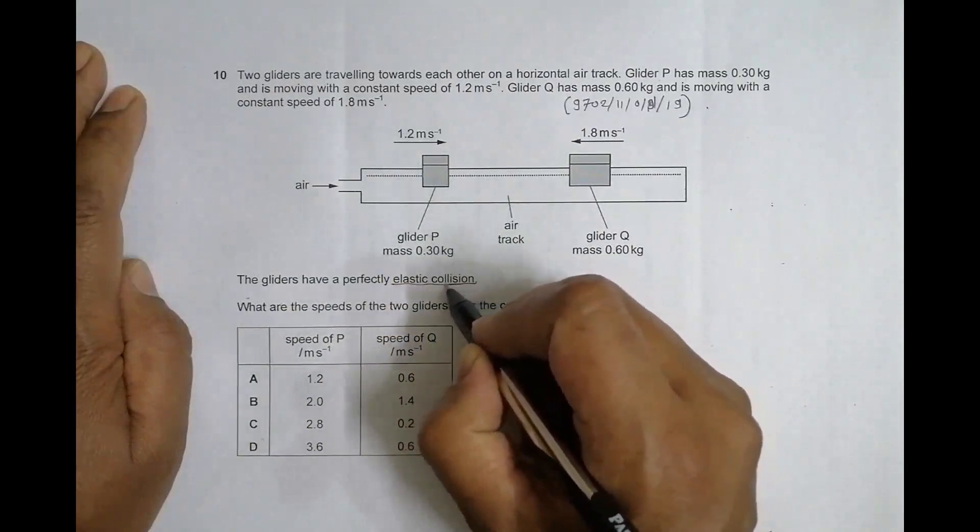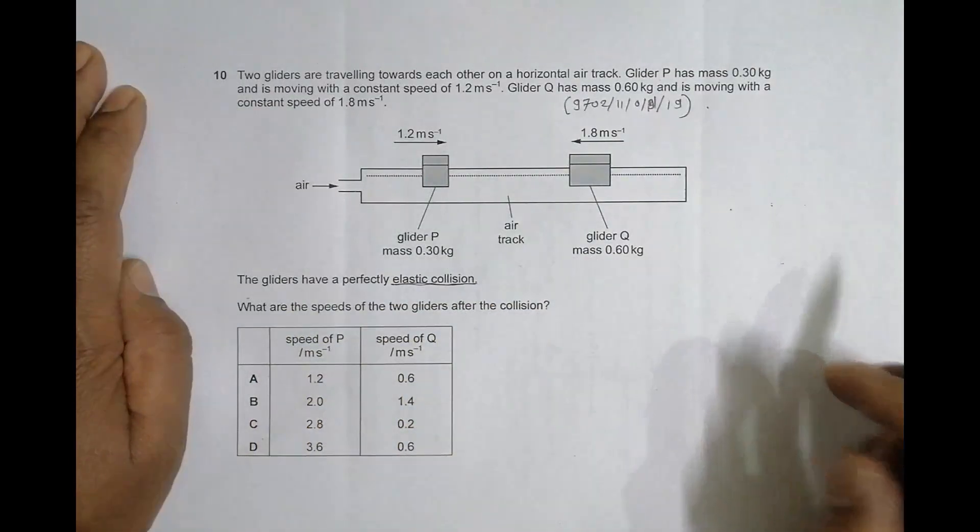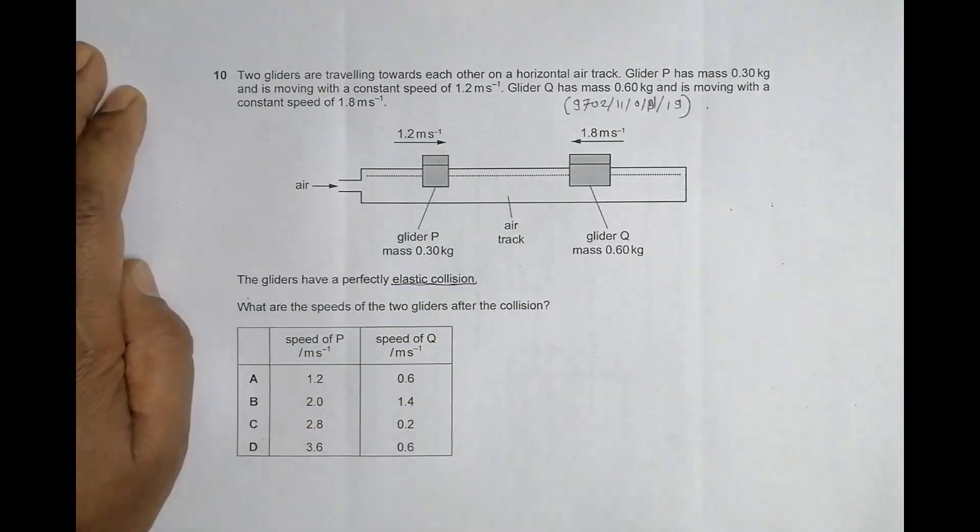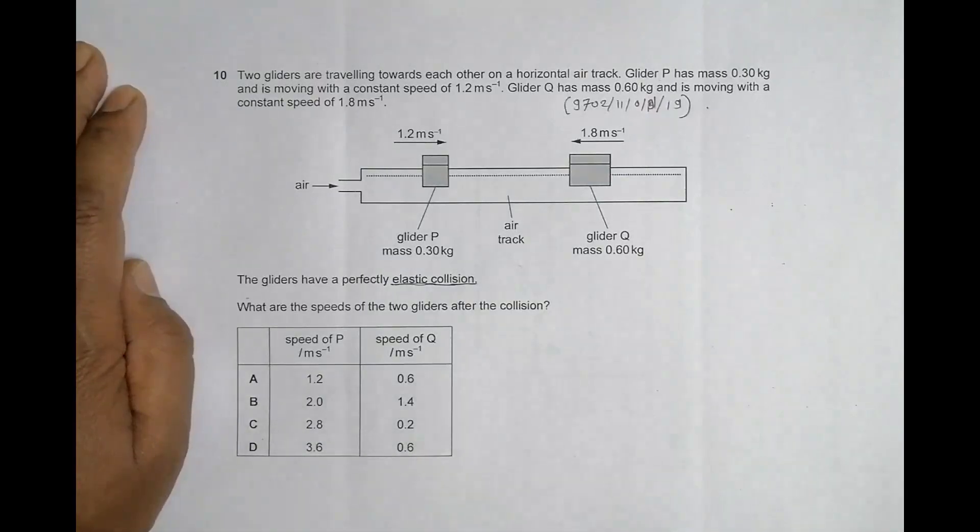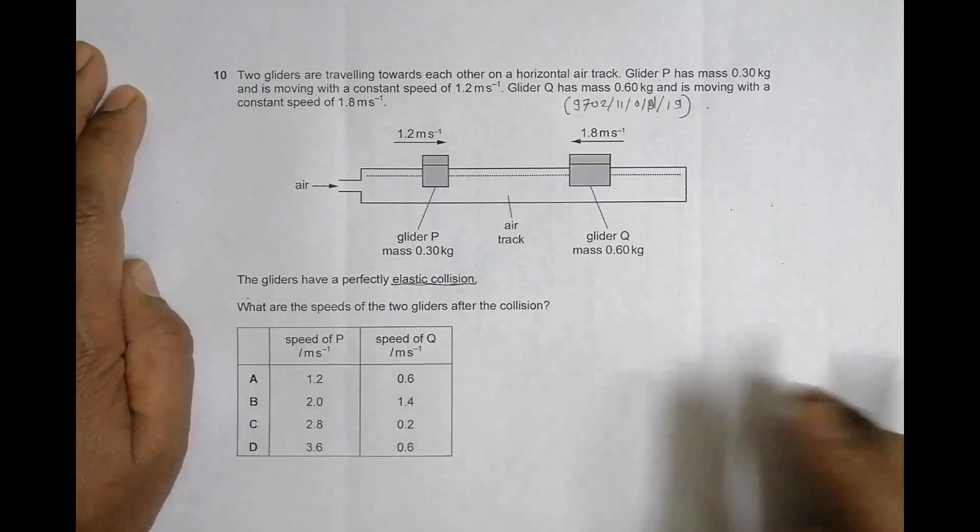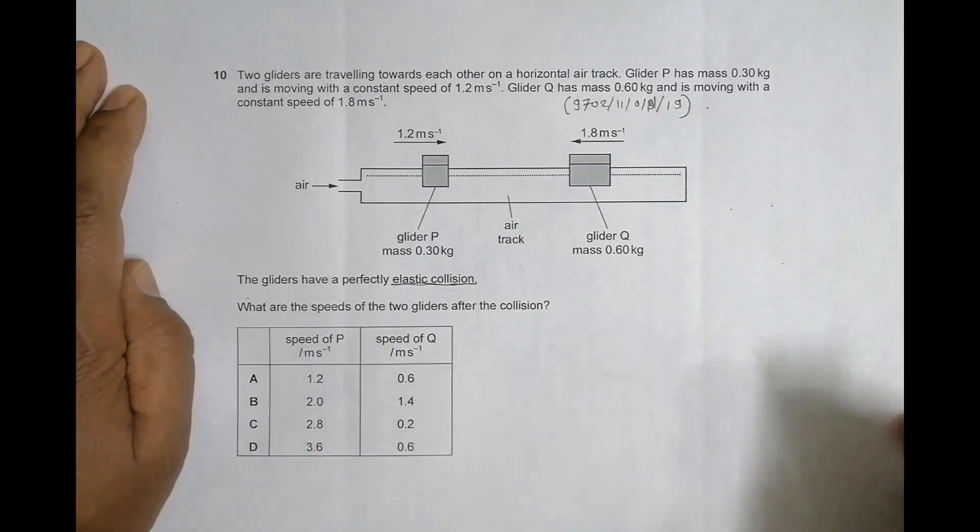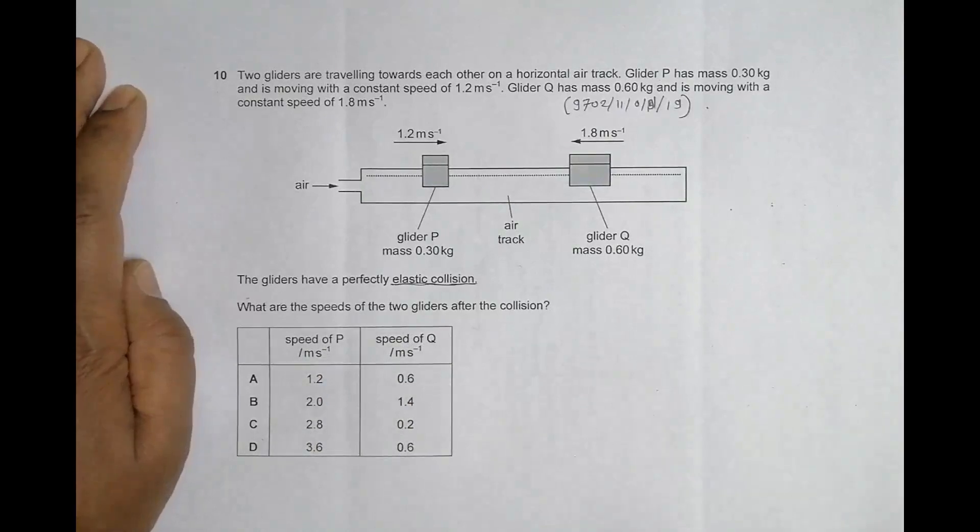The gliders have a perfectly elastic collision, so no loss of kinetic energy. What are the speeds of the two gliders after the collision? When I tried this problem using the formula linear velocity of approach equal to linear velocity of separation, that gave two answers and two choices here because they asked for speed. Had they given velocities, only one choice would have been correct.